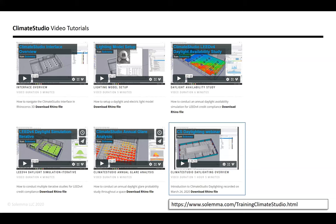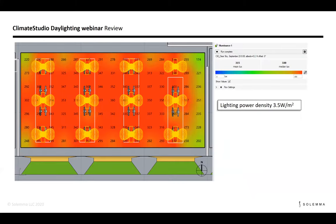For those of you that weren't there two days ago, we conducted daylighting analysis of a single floor of a multi-story office building. We did an annual glare analysis, a daylight availability study, and finished with an electric lighting study — verifying that with the chosen luminaires and grid layout, you would get the required 300 lux across the whole work plane. The lighting power density calculated for the space is 3.5 watts per square meter. This is the hook we'll use today as we continue with energy analysis of the same space.